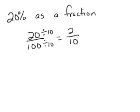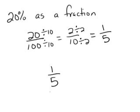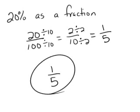Well, my fraction still isn't in its simplest form because 2 will go into both 2 and 10. So I'm going to go ahead and divide top and bottom by 2. And 2 divided by 2 is 1, and 10 divided by 2 is 5. So 20% as a fraction in its simplest form is 1 fifth.